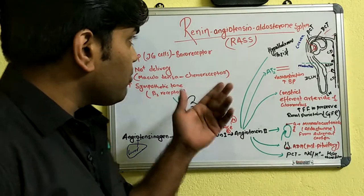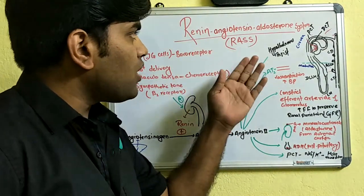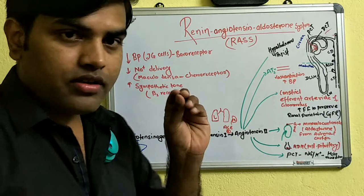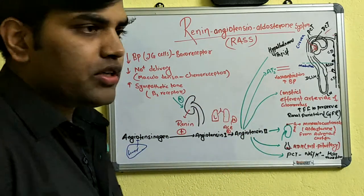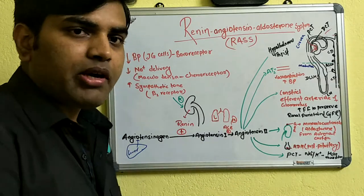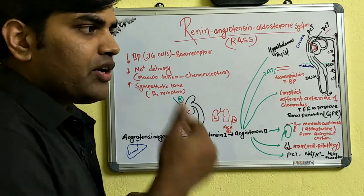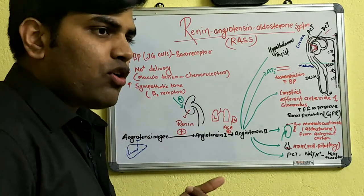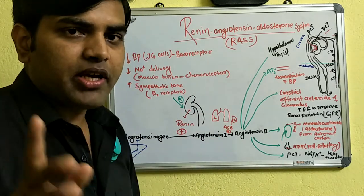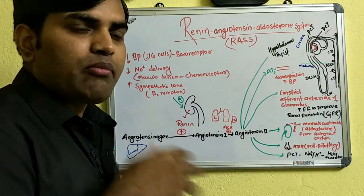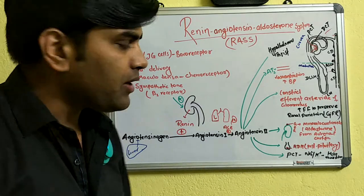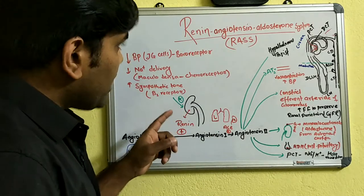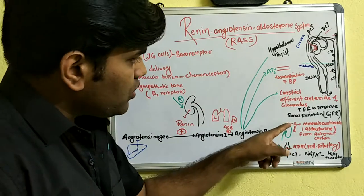Today we will be discussing the renin-angiotensin-aldosterone system, also known as the RAAS. Renin is an important hormone secreted by the kidney. Other hormones secreted by the kidney include erythropoietin and vitamin D, while hormones that act on the kidney include aldosterone, angiotensin-2, and parathyroid hormone. Renin forms an axis known as the renin-angiotensin-aldosterone system.